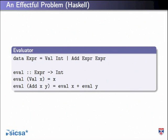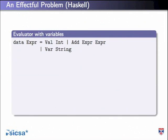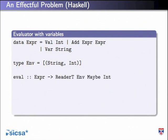Let's add variables. If we add variables, two things need to happen. Firstly, we need to get the values of each variable. We've got an environment mapping variable names to integers, and of course that might fail. So we have some kind of exceptions - we'll return maybe an int to show that it might fail. And we'll use this reader monad transformer to say we also have some state we're carrying around that we can access.